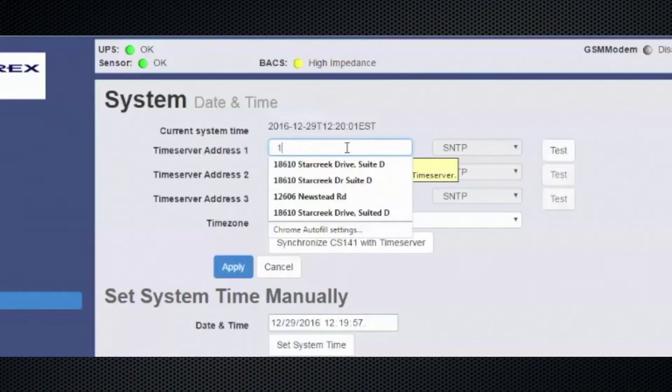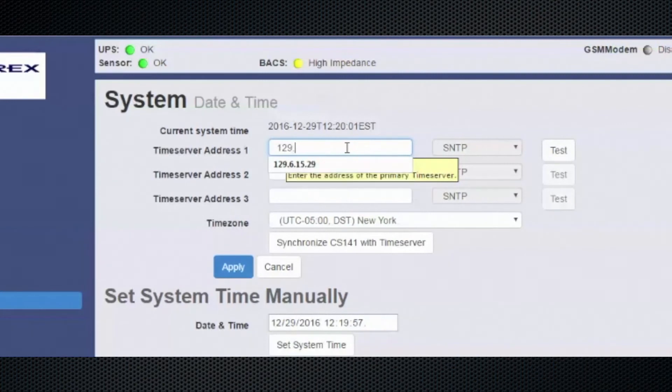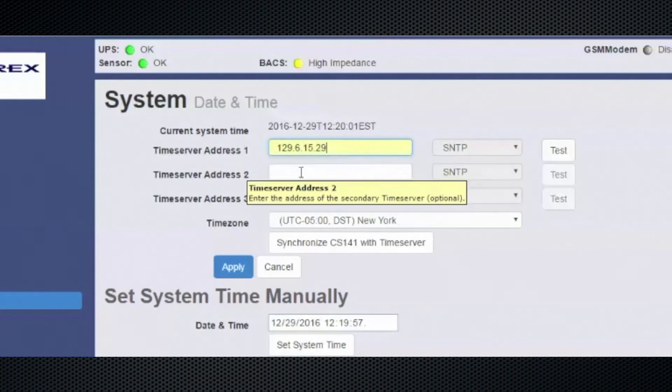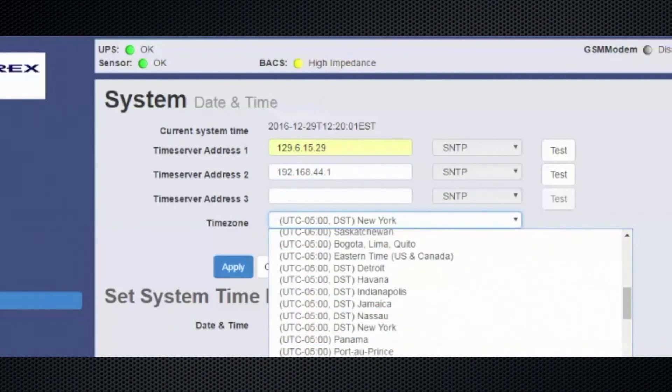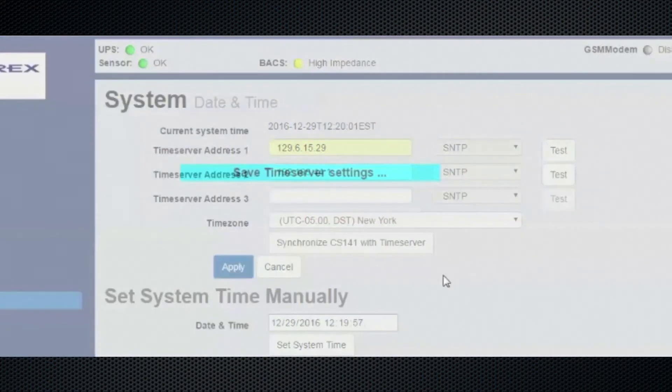The Bax web manager requires a time server. In this section you can set up to three different time server IP addresses. In this section you can also select your time zone using the drop down menus. Once complete hit apply to save any changes.